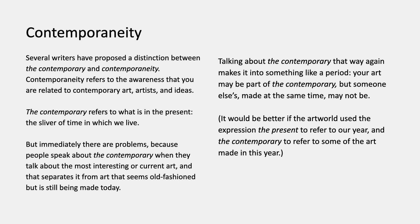The contemporary refers to what's in the present, the time in which we live. But people tend to talk about the contemporary when they mean to say interesting, current art. So the contemporary, if you're talking about art, is a way of talking about art that's present, done in the present, but it's more engaging or more interesting than work that seems old-fashioned but still being done in the same year. Talking about the contemporary that way makes it again into something that's like a period. Your art can be part of the contemporary — you can participate in the contemporary — but someone else's art made at the same time may not be part of that conversation. It would be clearer if people in the art world used the expression 'the present' to refer to our year, but they use 'contemporary' and 'contemporaneity' in this ambiguous way to talk about something that might be a period or might be just the present.